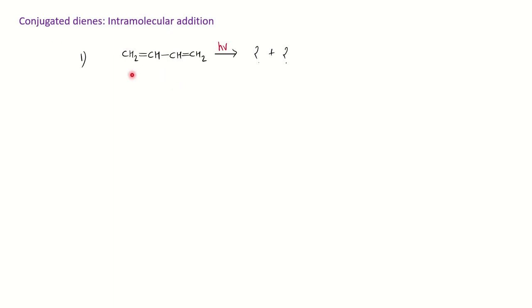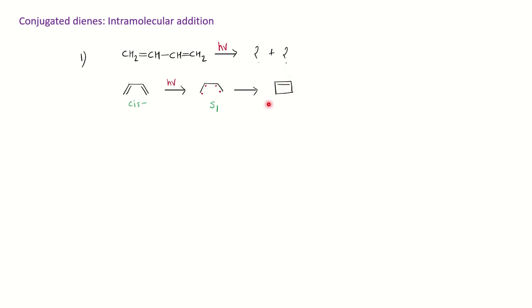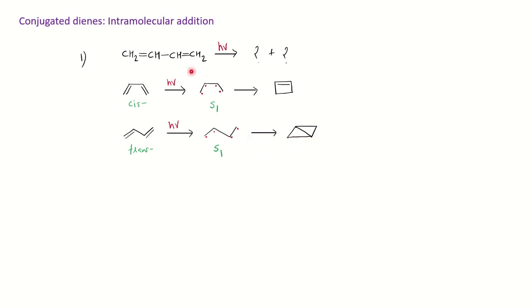Now we will see examples involving conjugated dienes. Taking the simple example of butadiene under photochemical condition — since the question does not specify cis or trans configuration, we assume both. For the cis form, the reaction occurs from the singlet state and you get cyclobutene by 2+2 cycloaddition. For the trans form, similarly you show biradical formation and form a bicyclic compound.